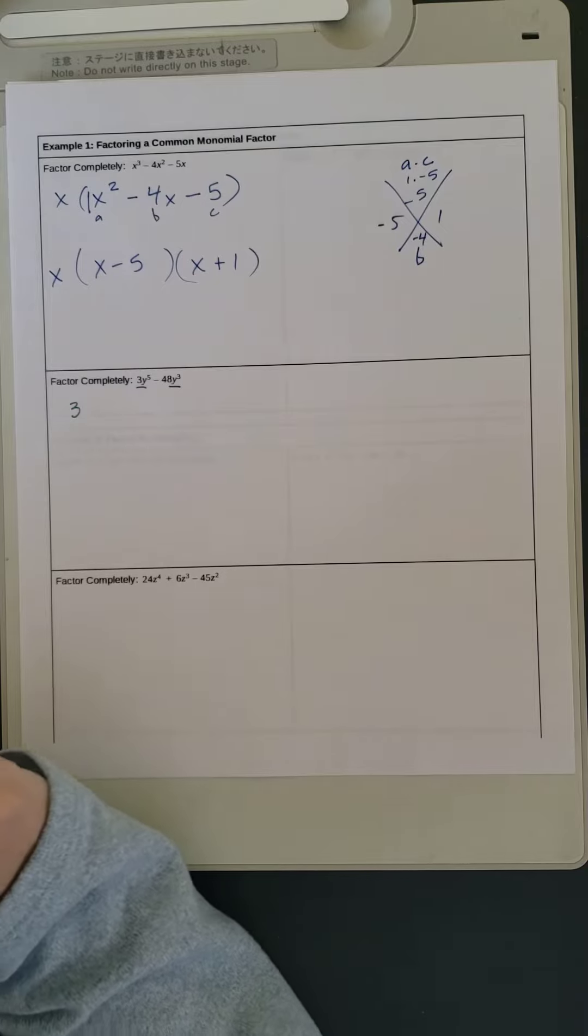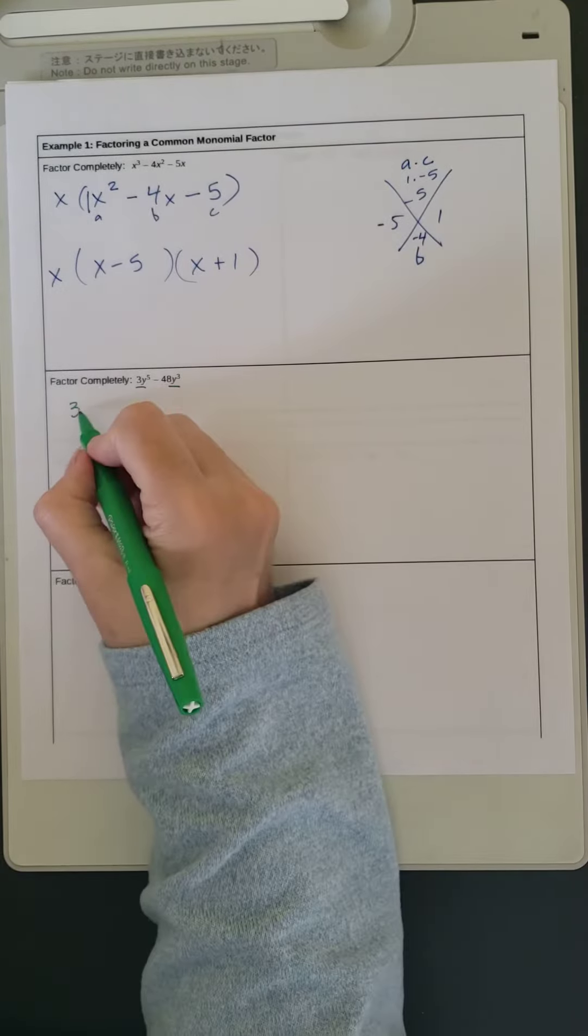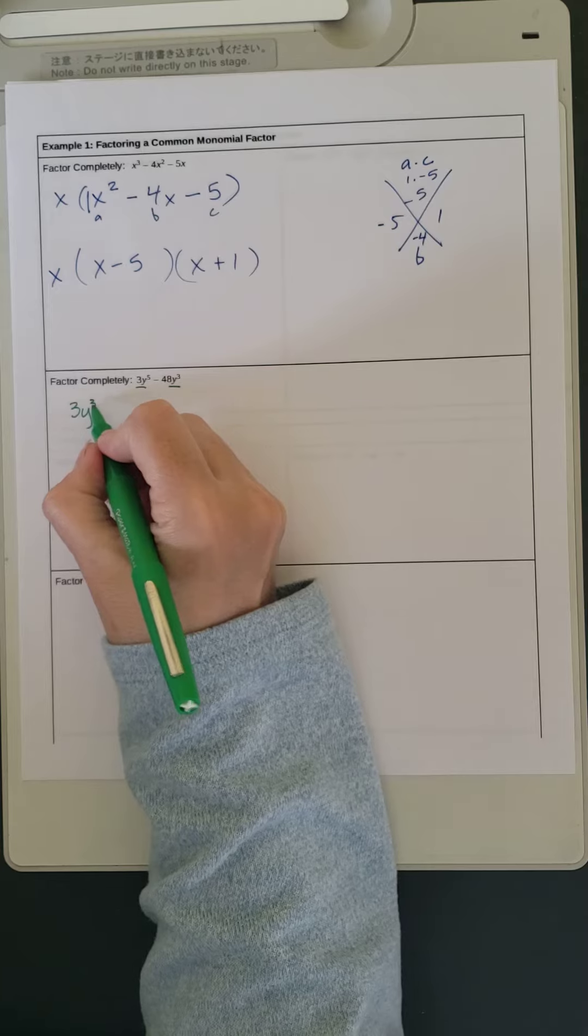We have y to the 5th and y cubed. So the largest y power that we have in common is y cubed.